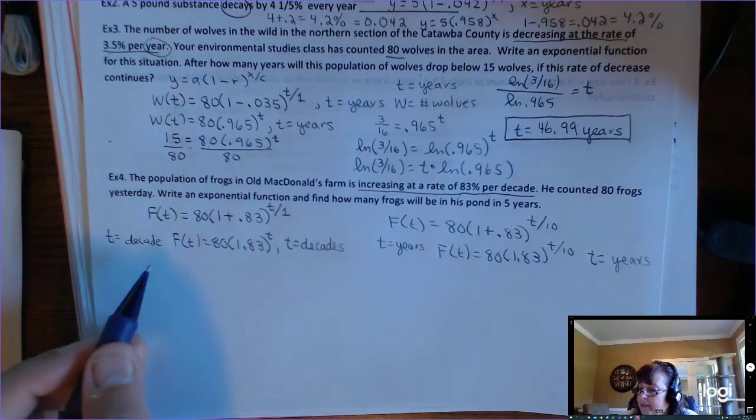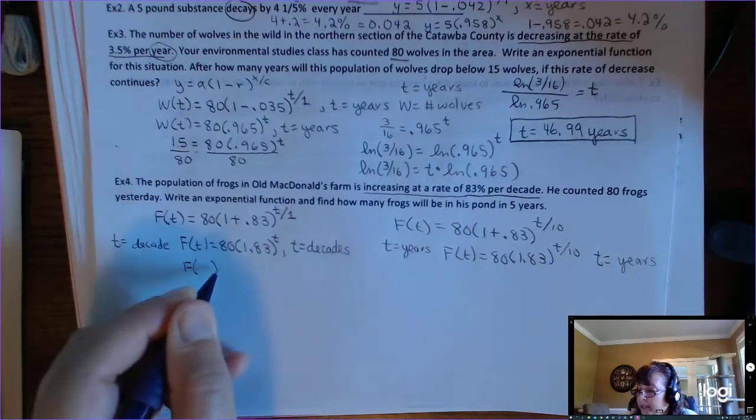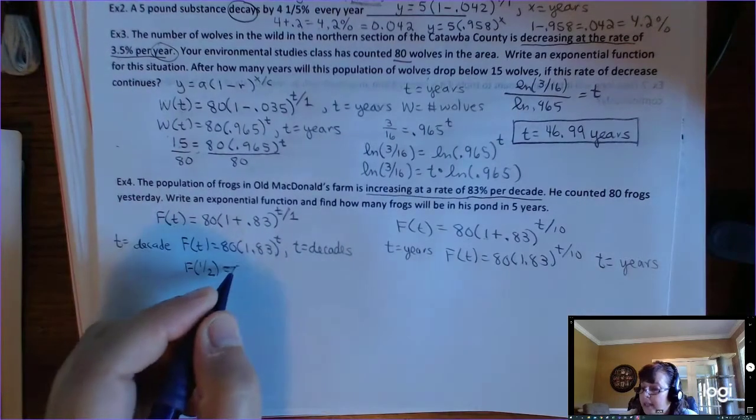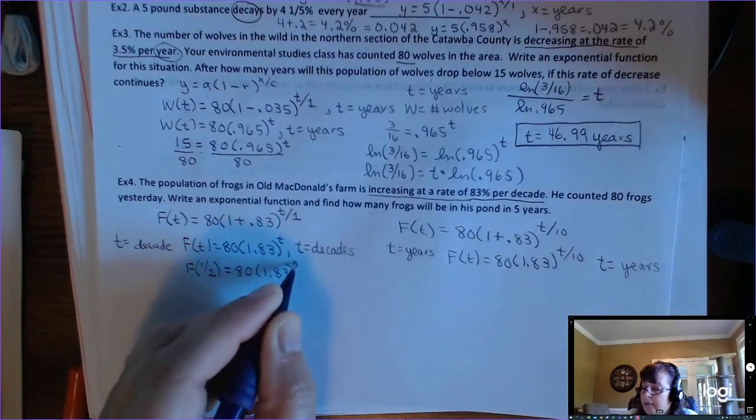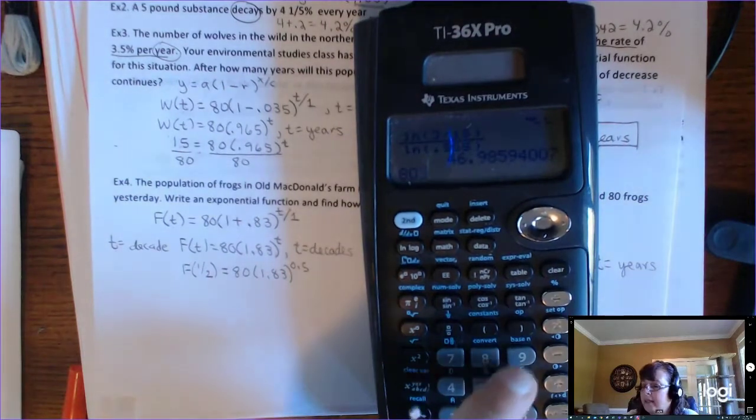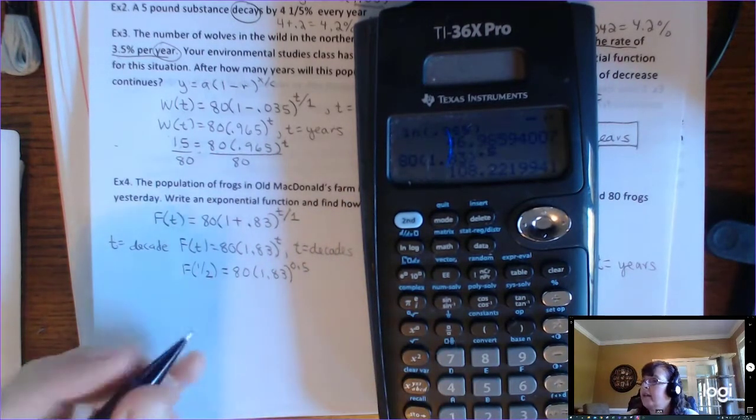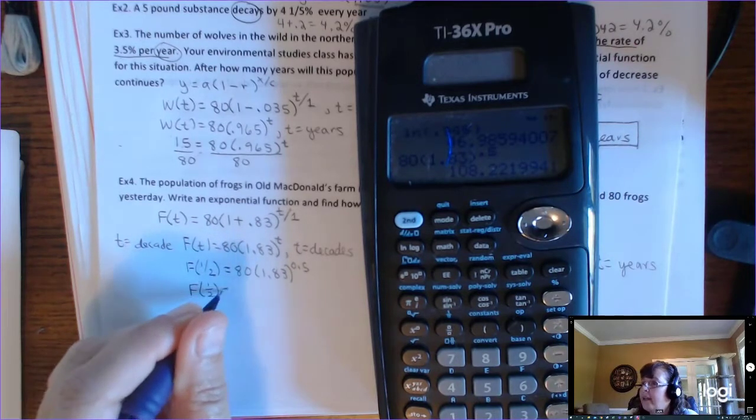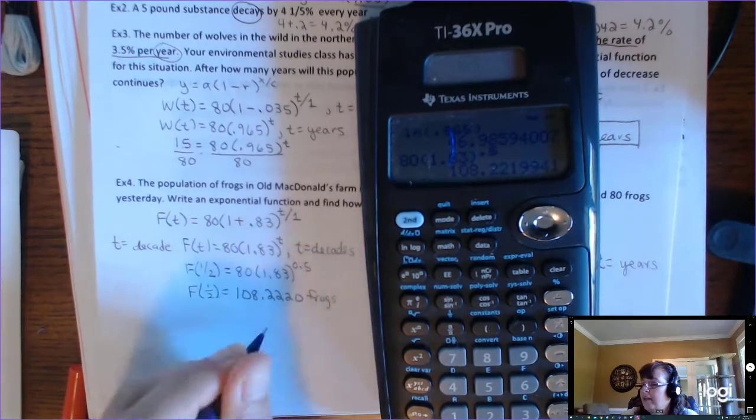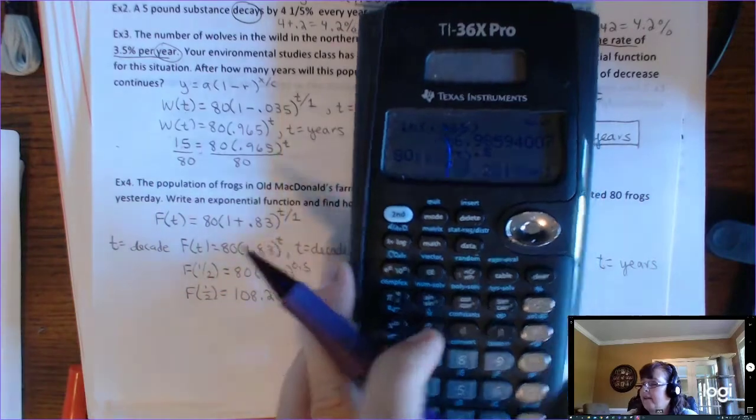So the question is, how many frogs will be in this pond after five years? So that means we get to plug what in here if t is in decades? Well, if t is five years, that's a half a decade. So we can't plug five in here. We have to plug 0.5 in there. Let's see what that comes out to be. 80 times 1.83 to the 0.5. And that's going to give you, after half a decade, you're going to have 108.2220 frogs. If I round that to four decimal places, look at the fifth decimal, round that up. That makes that one go to two.